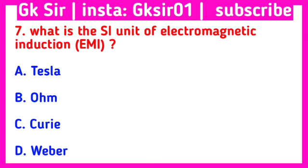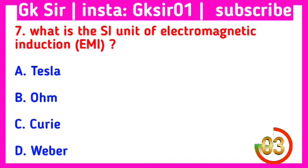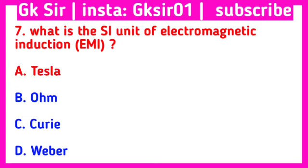Question number 7. What is the SI unit of electromagnetic induction (EMI)? Option A: Tesla, Option B: Ohm, Option C: Curie, Option D: Weber. The correct answer is Option A: Tesla.